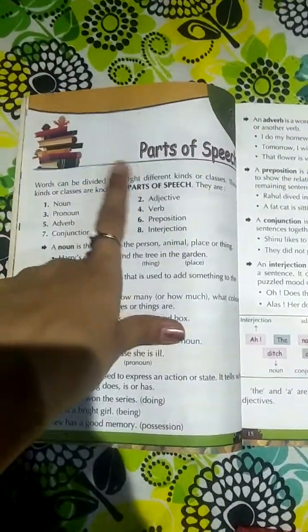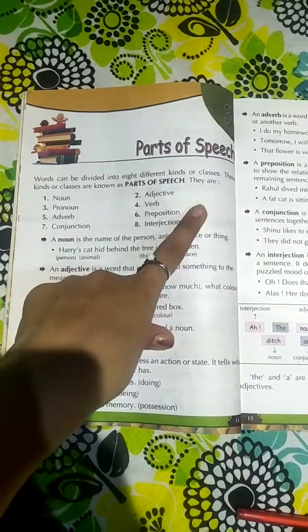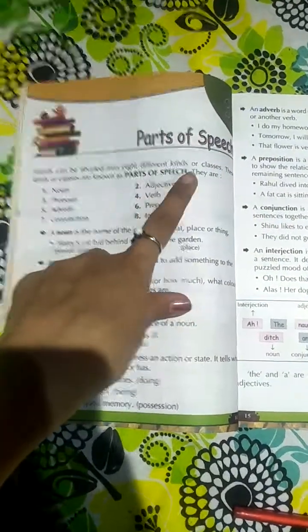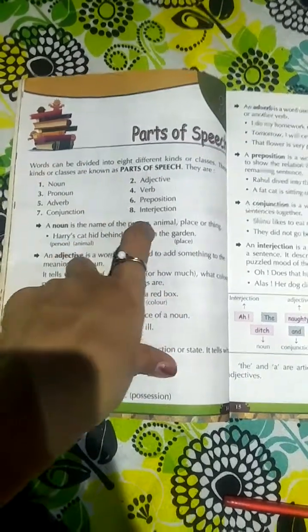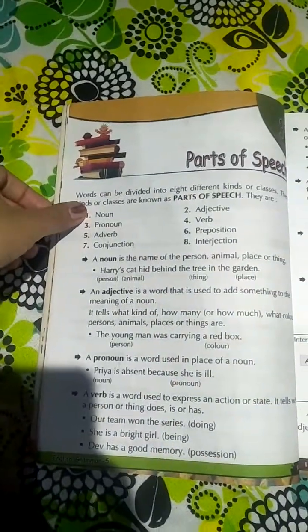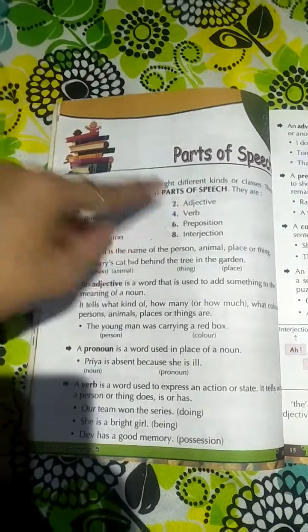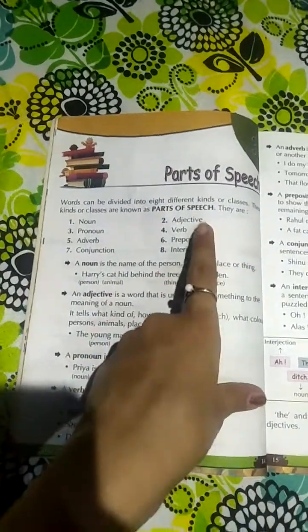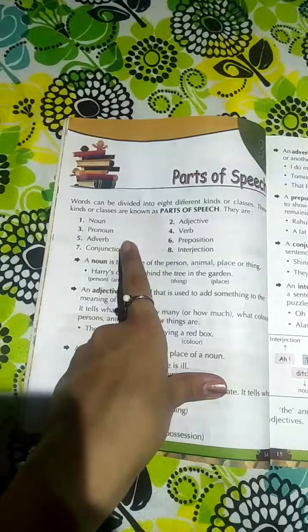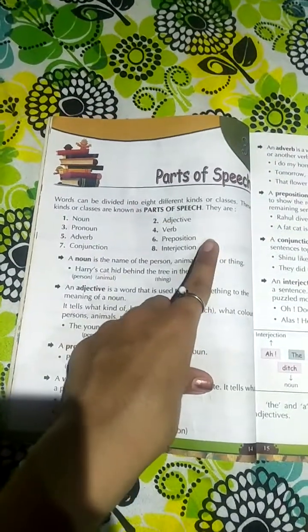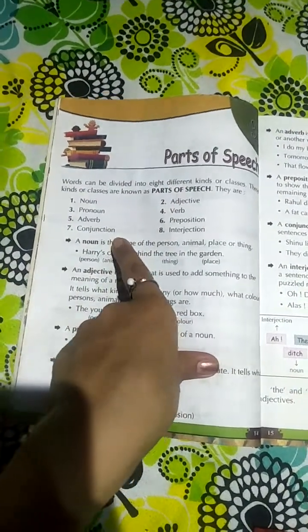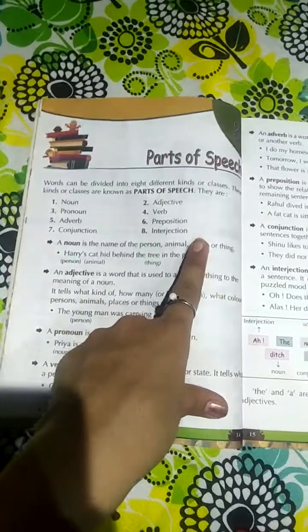Words can be divided into 8 different kinds of classes, that is also called parts of speech. There are 8 parts of speech: 1st is noun, 2nd is adjective, 3rd is pronoun, 4th is verb, 5th is adverb, 6th is preposition, 7th is conjunction, 8th is interjection.